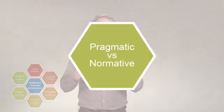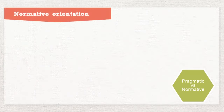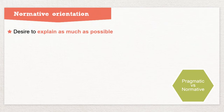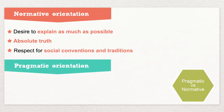The pragmatic versus normative dimension describes how people in the past as well as today relate to the fact that so much that happens around us cannot be explained. In societies with a normative orientation, most people have a strong desire to explain as much as possible. People in such societies have a strong concern with establishing the absolute truth and a need for personal stability. They exhibit great respect for social conventions and traditions, a relatively small propensity to save for the future, and a focus on achieving quick results.